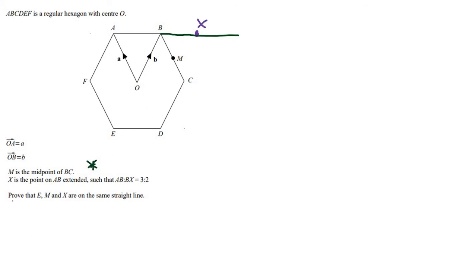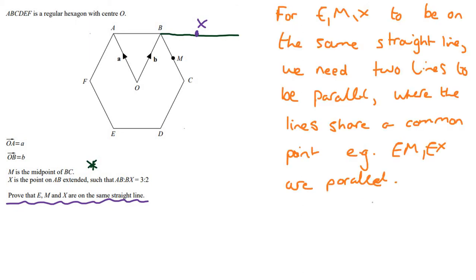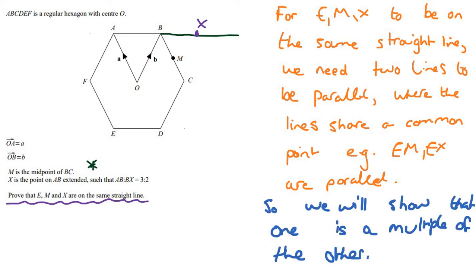What we need to do is prove that E, M, and X are on the same straight line. For three points to be on the same straight line, we need two lines to be parallel and share a common point. So we're going to show that EM and EX are parallel — we show that one is a multiple of the other — and they share the common point E.